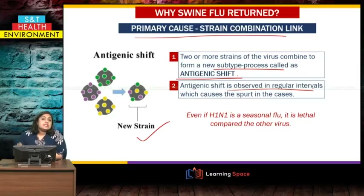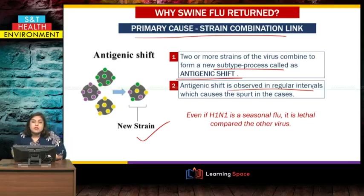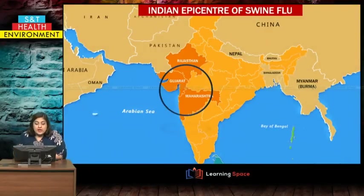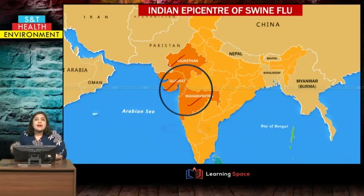Even if H1N1 is now a seasonal flu with available medicines, it can still be lethal and fatal — people can die from this flu compared to some other flu viruses. The Indian epicentres of swine flu are Rajasthan, Gujarat, and Maharashtra among some other states, with Gujarat and Maharashtra being the worst hit.